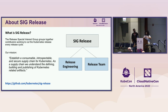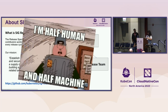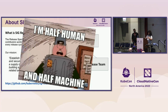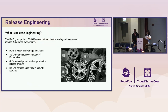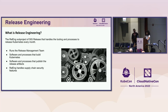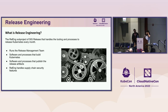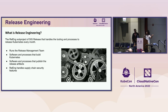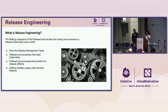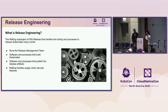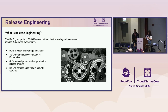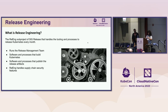This is our main entry point into the SIG — we'll have links for it at the end. The release engineering team takes care of the tooling that powers Kubernetes releases. We also manage the release managers team, which is the group of contributors that take care of executing the tools to release Kubernetes — cutting the releases every time we have a new patch release or when the release cycle is up.